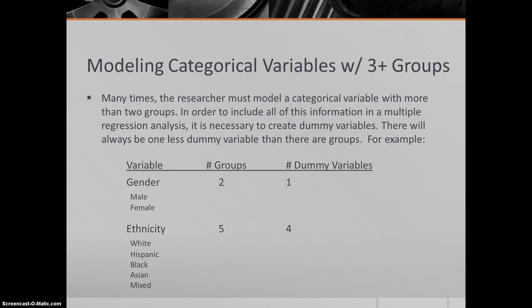Now let's talk about modeling categorical variables with three or more groups. This happens many times. The researcher must model a categorical variable that has more than two groups. In order to include all of this information in a multiple regression analysis, you have to create dummy variables. There are a couple other ways to do this type of modeling, but we're going to focus on dummy variables here.